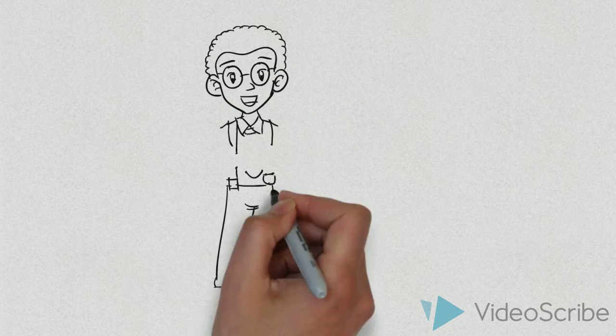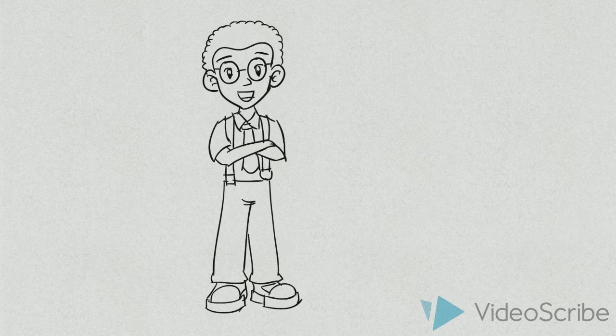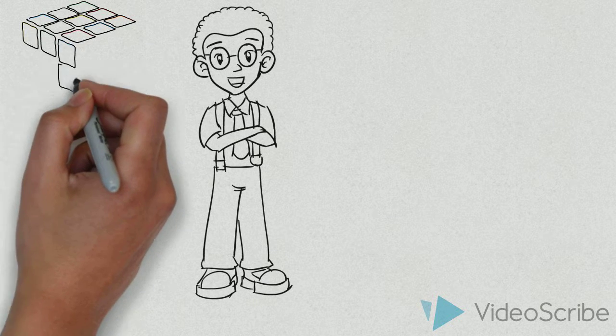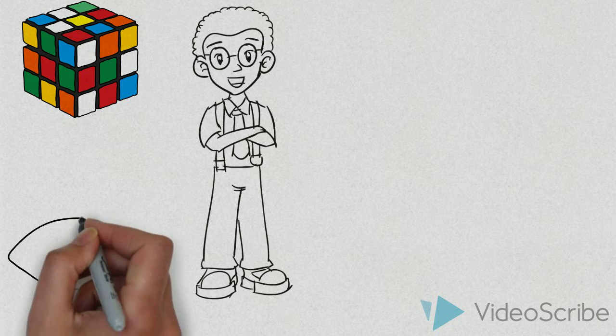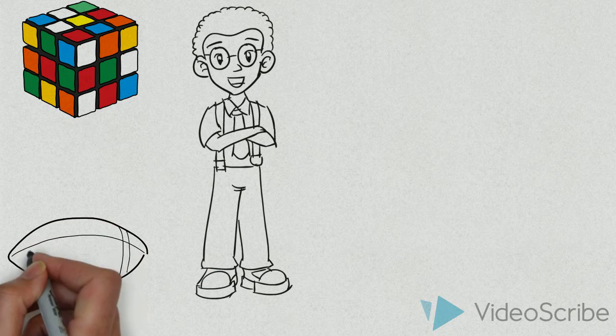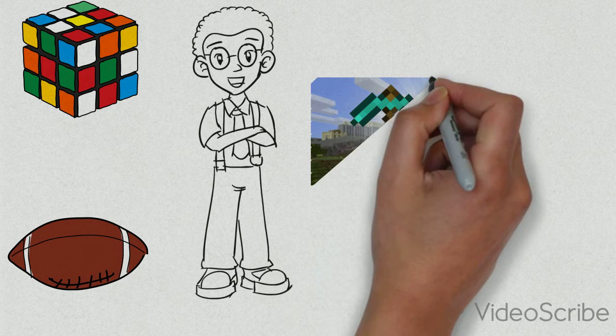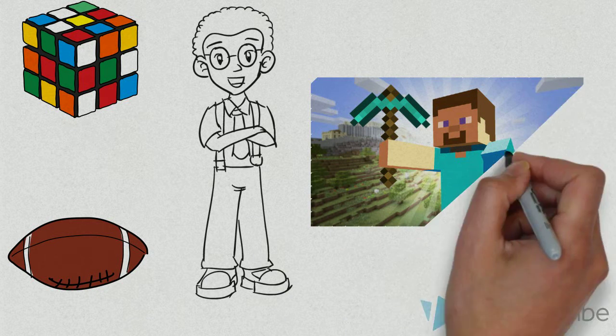Meet Tobin, a 12-year-old middle school student. He can solve the Rubik's Cube in less than 20 seconds. He plays flag football with friends on weekends. But his favorite thing to do is play Minecraft with his sister and friends.